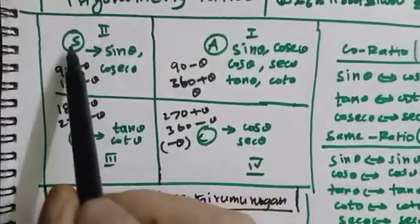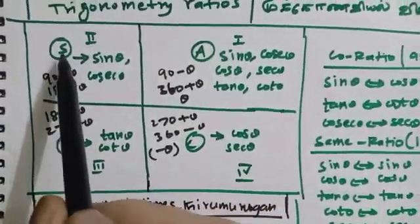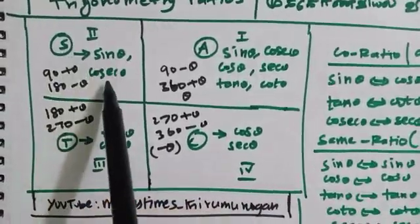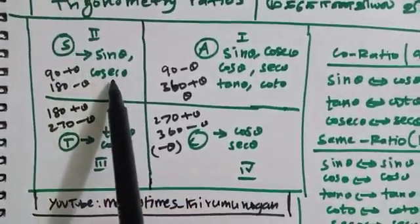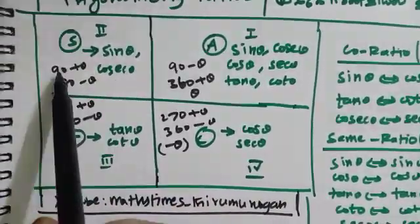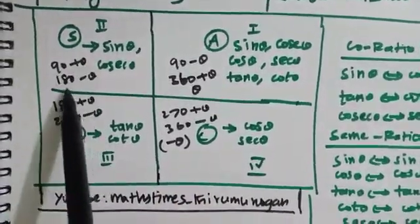When you're using a second quadrant, you're using the south side, and it's 90 plus theta.